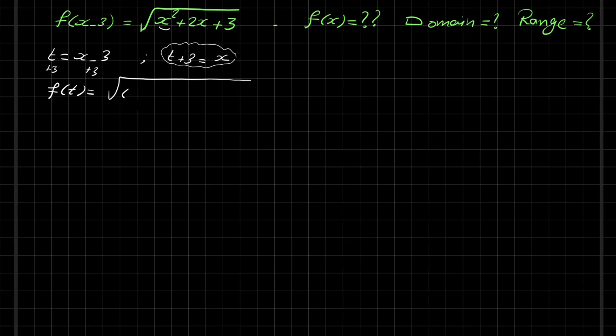So x squared is t plus 3 squared, plus 2 times x which is t plus 3 again, plus 3. If we expand t plus 3 squared, this is t squared plus 6t plus 9.